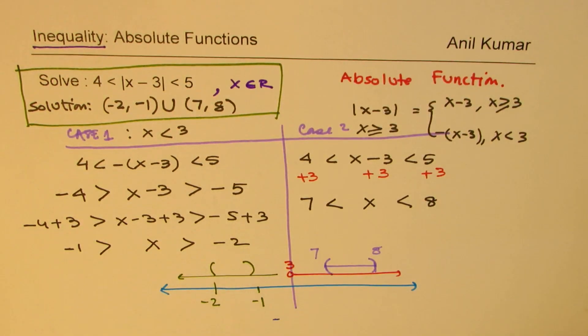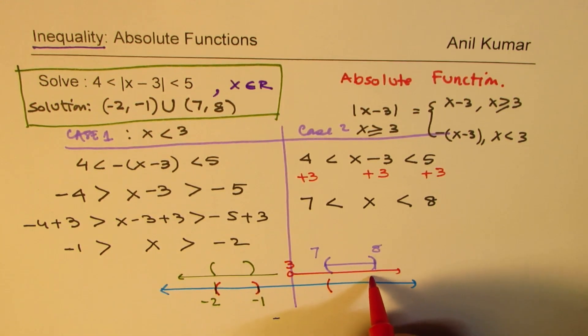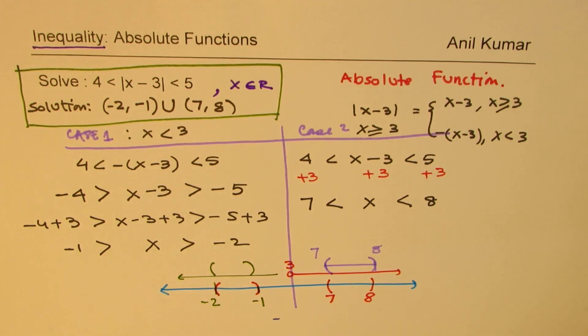On a number line the solution is shown like this. We can use a bracket like this, which means these two values are not included. And here we will have 7 to 8. So that is how we will solve this inequality.